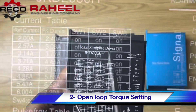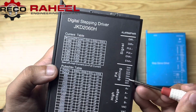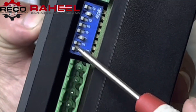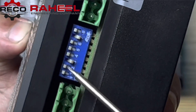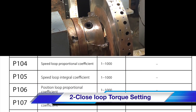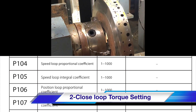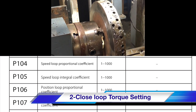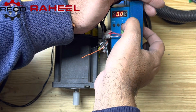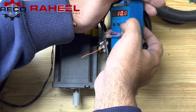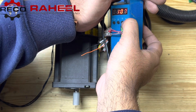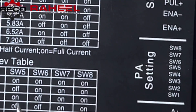Open loop stepper torque setting is done according to the table given on the driver, and torque is adjusted from the DIP switch on the side of the driver. For the closed loop driver, the torque is adjusted through gain parameters — P104, P105, P106, and P107 — as you can see on screen. These are the gain parameters for torque setting and these are all the default values.